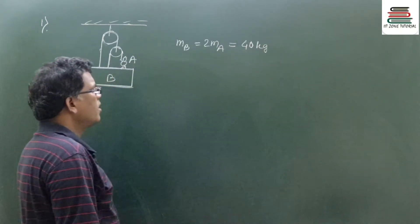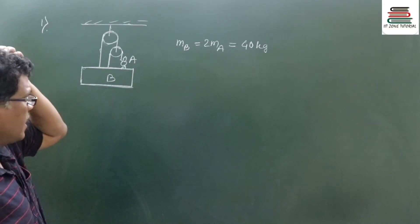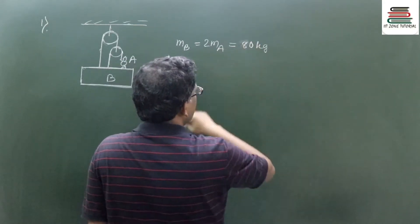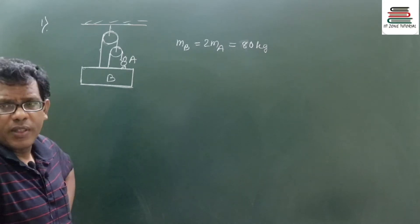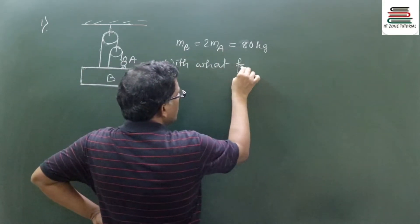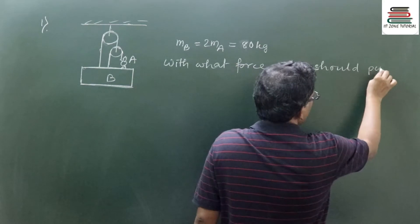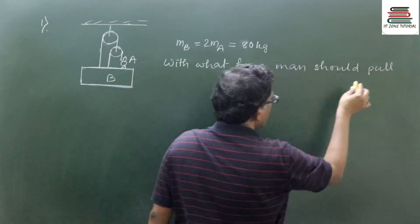Mass of A is 40 kg and mass of B is twice that, so B is 80 kg. The question is: with what force should the man pull the rope to keep the arrangement at rest?